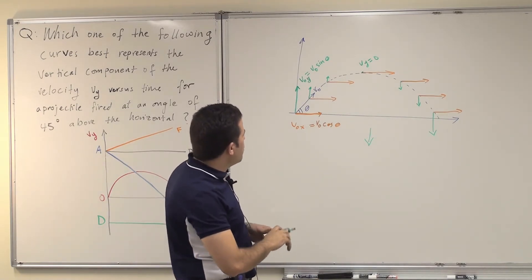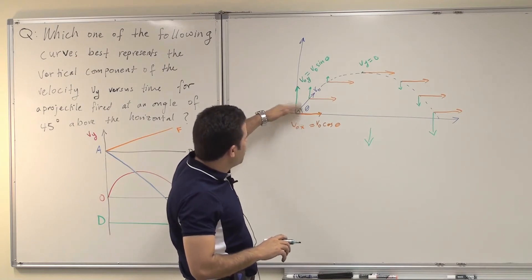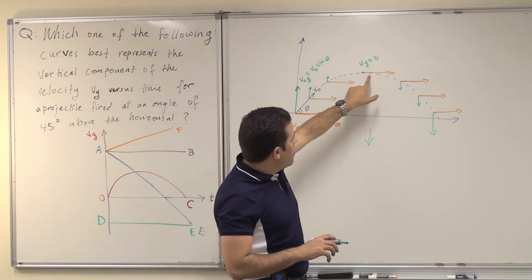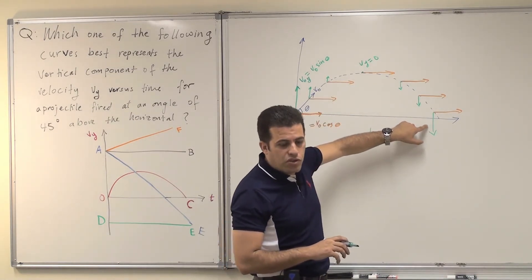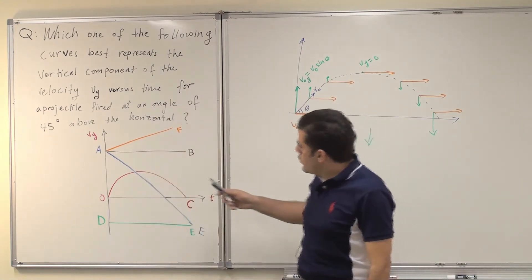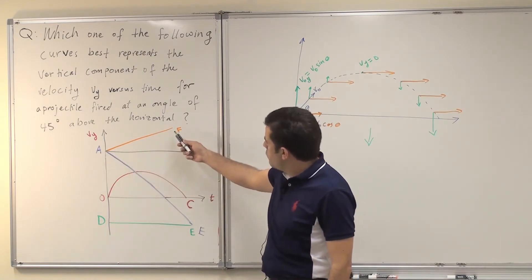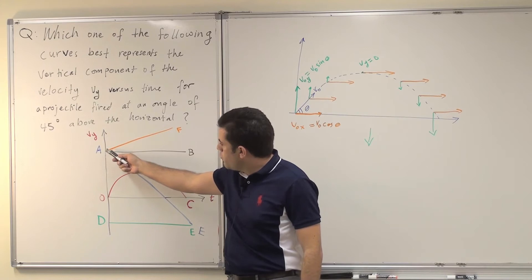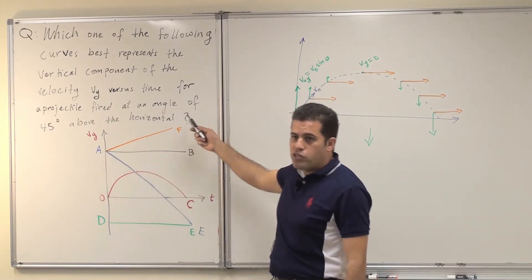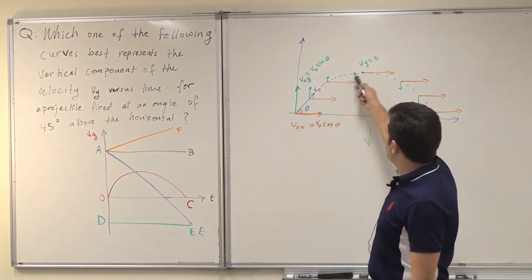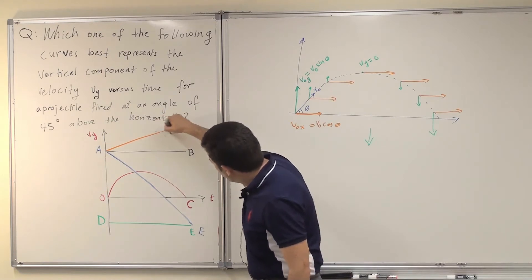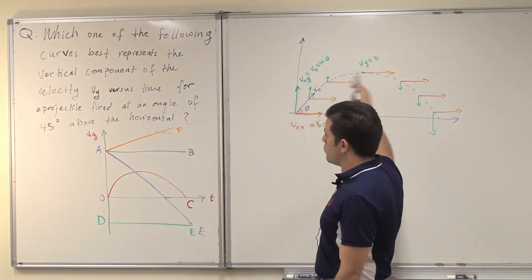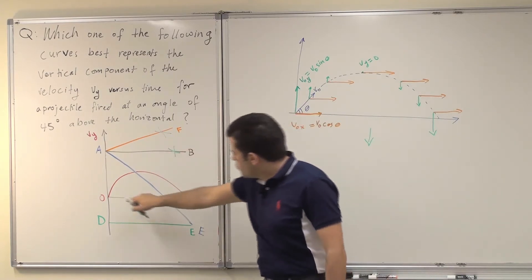So we can tell that the vertical component of velocity Vy has to start from a large positive quantity, then reach zero, then experience a reversal in direction — becoming negative. Looking at the curves, the first curve from A to F, the orange curve, indicates that Vy was constant, which is not the case. The vertical velocity is not constant — it will be changing. So I can exclude this. Let's go to curve O to C.